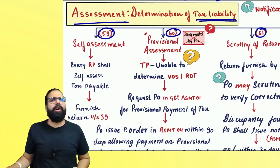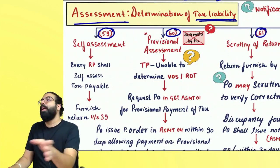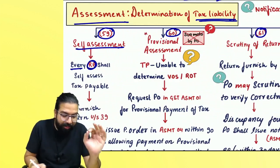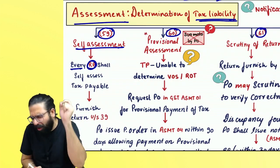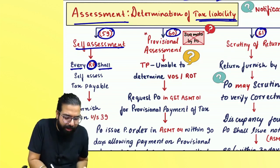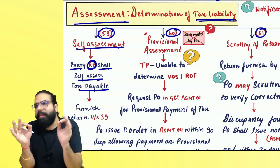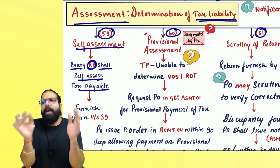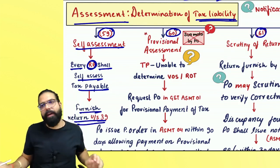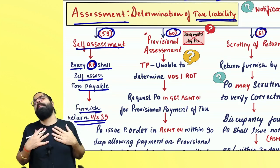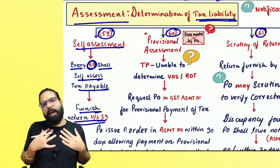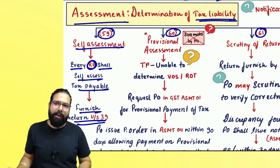Section 59 talks about self-assessment. Every registered person shall mandatorily do the self-assessment. They shall self-assess the tax which is payable, pay the tax, and file their return under section number 39. I will myself determine my tax, pay the tax, and file my return — that is self-assessment.